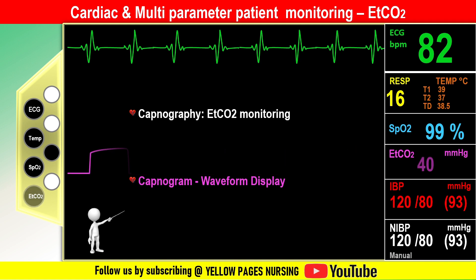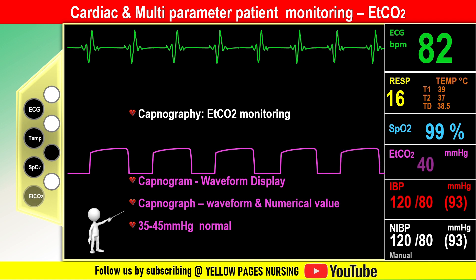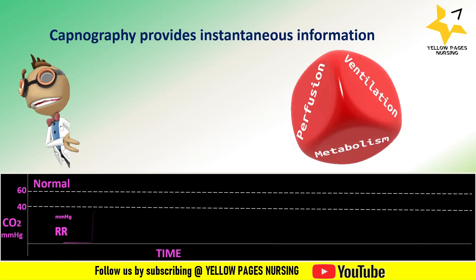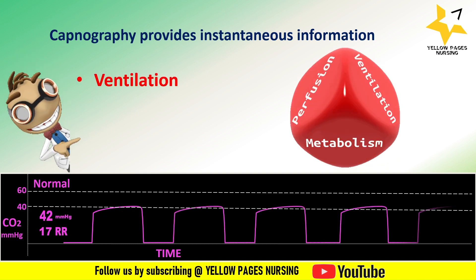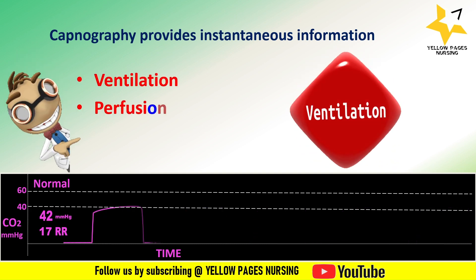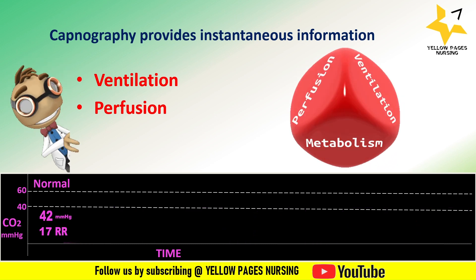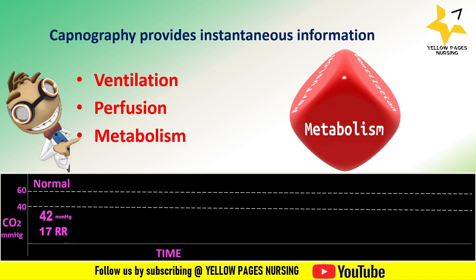EtCO2 normal range is 35 to 45 mmHg. Capnography provides instantaneous information regarding ventilation — how effectively carbon dioxide is being eliminated by the pulmonary system; perfusion — how effectively carbon dioxide is being transported through the vascular system to the lungs; and metabolism — how effectively carbon dioxide is being produced by cellular metabolism.